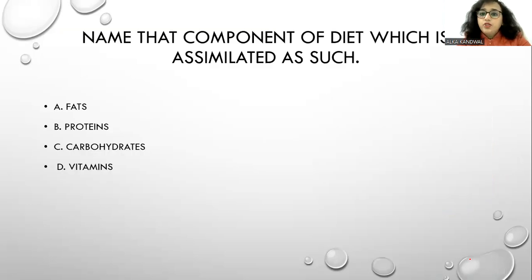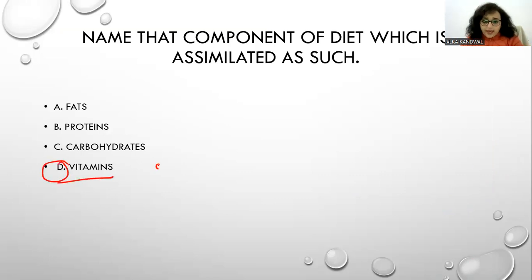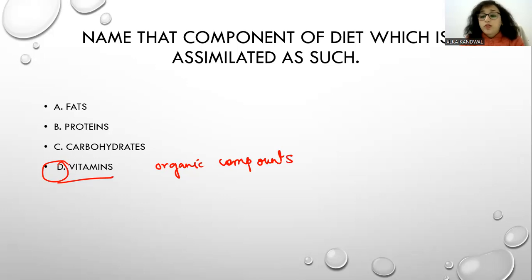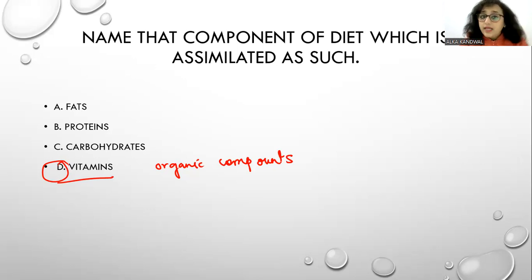Name the component of the diet which is assimilated as such. The answer is vitamins. Vitamins are organic compounds that are very important and are required in the diet to perform special biological functions. Vitamins are the components of the diet which are assimilated as such.